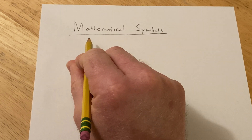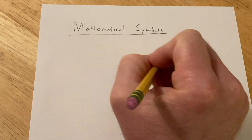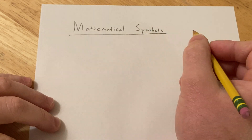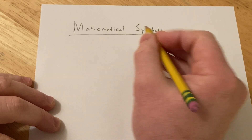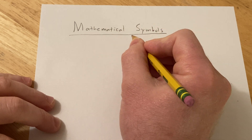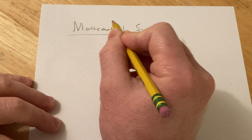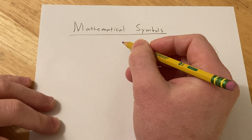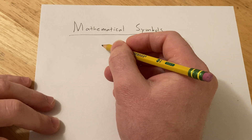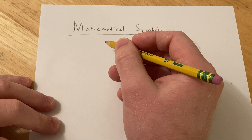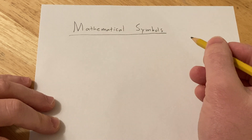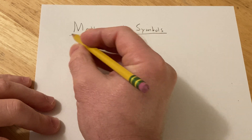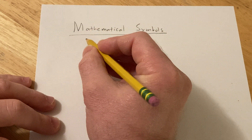In this video we're going to talk about mathematical symbols. Mathematical symbols are different symbols that come up in mathematics that you typically learn about if you're a math major and you take a course where you learn to write proofs. But if you're a calculus student or an algebra student, you typically don't see all of these symbols, but they're really basic and easy. My hope is that with this video you can learn some new symbols.